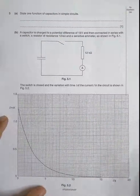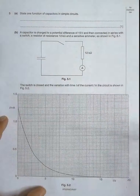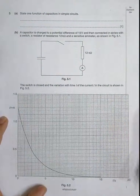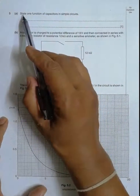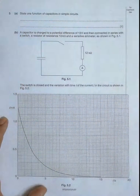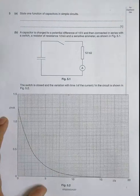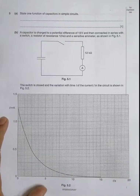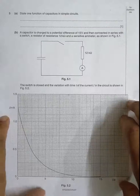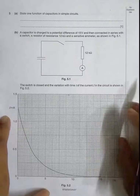Hello folks, this is an old classic question from October/November 2007, question number 5. It concerns the chapter on capacitors at A2 level. Part (a) asks to state one function of capacitors in simple circuits. By definition, a capacitor stores energy — it's a device to store energy or to separate charges. A capacitor also performs smoothing of rectified currents when we convert AC into DC.